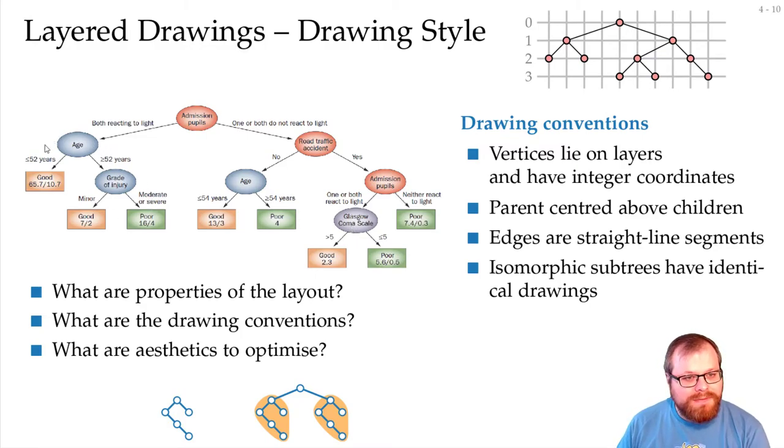There's something similar. We have this subtree here and here. This is almost the same. And basically, this is just mirrored. And it would be great, if we have these isomorphisms, that it's also drawn mirrored. And that's something that we can achieve here.